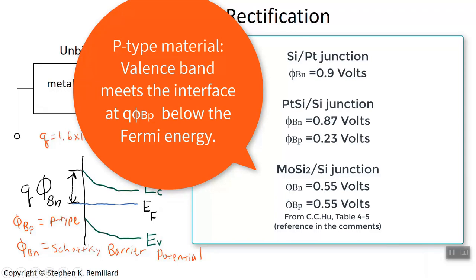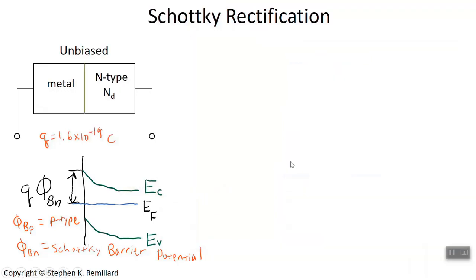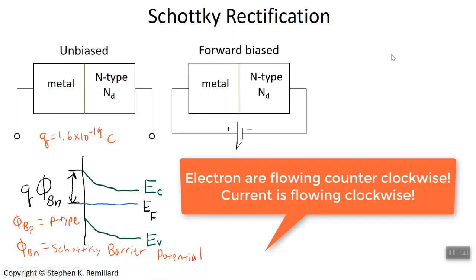That's the energy band diagram for an unbiased metal-semiconductor junction. Now let's place a bias voltage across the junction. A battery of voltage V has its negative terminal attached to the n-type semiconductor material, giving a forward-biased junction. Putting the negative terminal on the n-type chases electrons into the metal, allowing them to flow clockwise in a circuit.